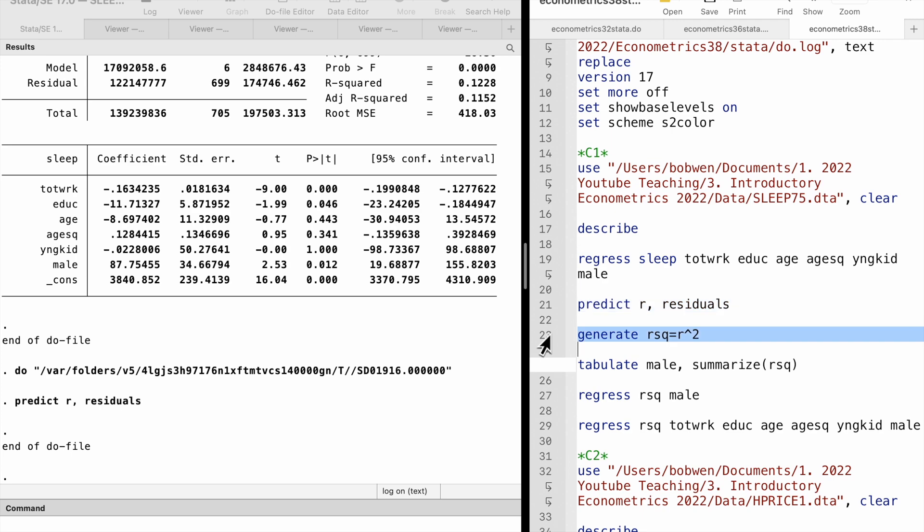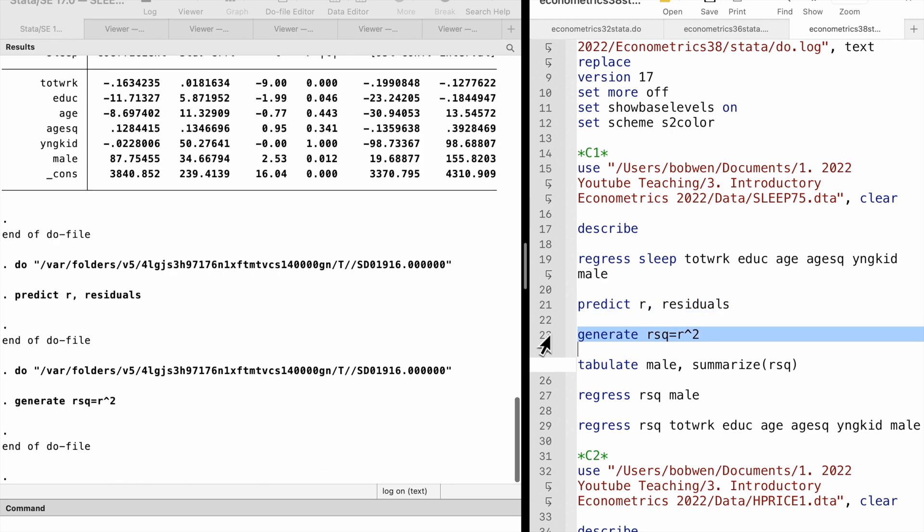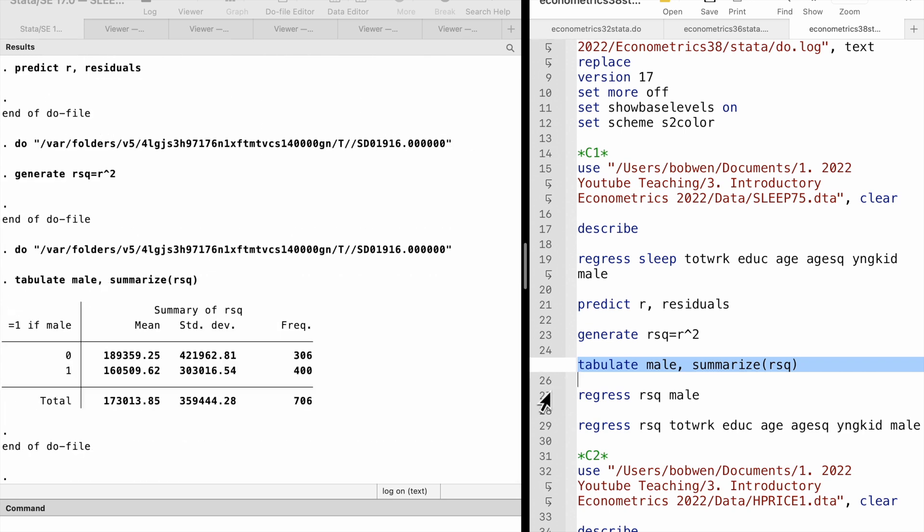Then we generate the squared residuals. To see whether the variance of the error term is the same for men and women, we can compare the mean of the squared residuals between men and women. To do that, we use the tabulate command with the summarize option.